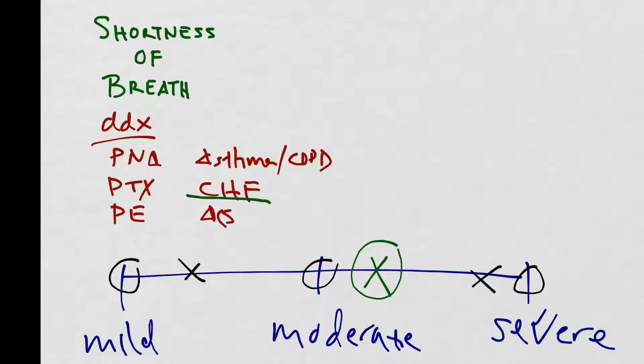So once again, our differential diagnosis would be pneumonia, pneumothorax, PE, asthma, COPD exacerbation, CHF exacerbation, and ACS. From this list, we can order the appropriate labs and make sure that we're not missing something critical. So we'll start with CBC to make sure our patient isn't anemic.